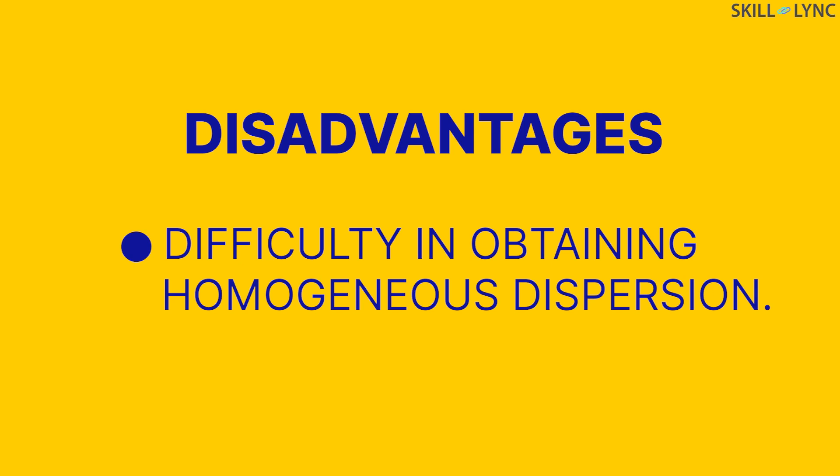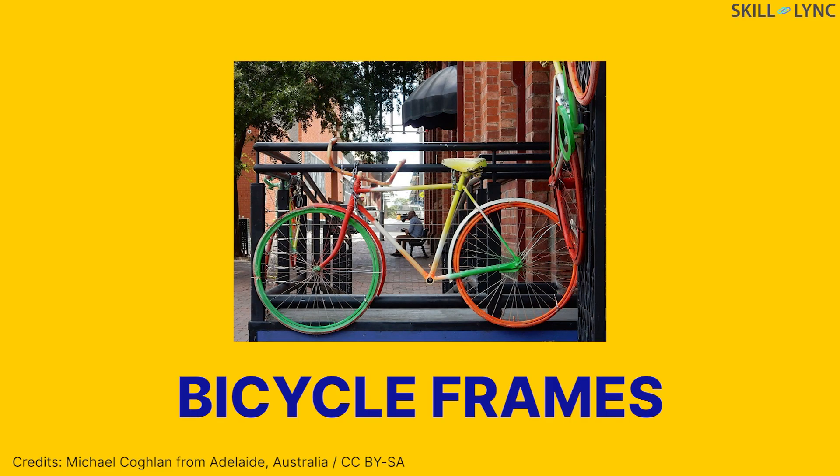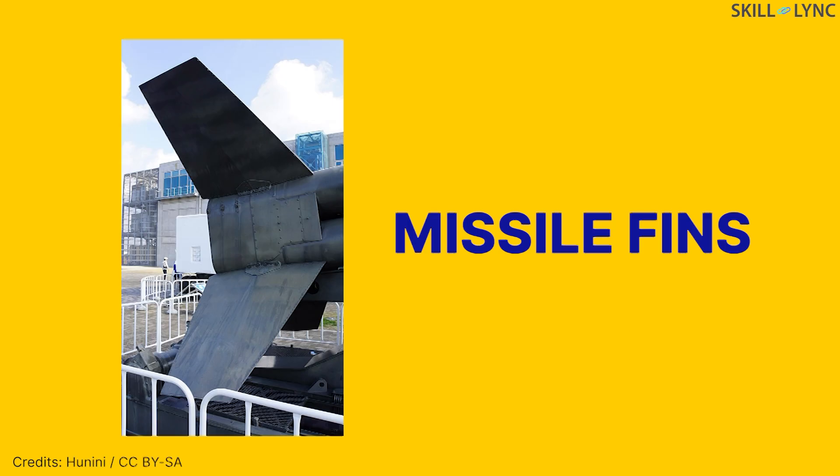Owing to its advantages which outshine its disadvantages, stir casting is employed in a large part of today's industry. It is used to manufacture bicycle frames, wheel rims, missile fins, jet engine blades, disc brake rotors, propeller shafts, and much more.